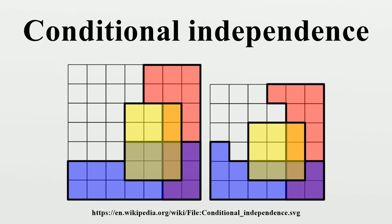2. Conditional independence depends on the nature of the third event. If you roll two dice, one may assume that the two dice behave independently of each other — looking at the results of one die will not tell you about the result of the second die. If, however, the first die result is a three, and someone tells you about a third event — that the sum of the two results is even — then this extra unit of information restricts the options for the second result to an odd number. In other words, two events can be independent, but not conditionally independent.